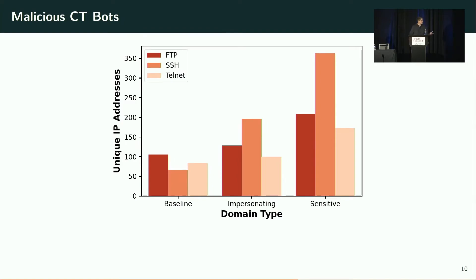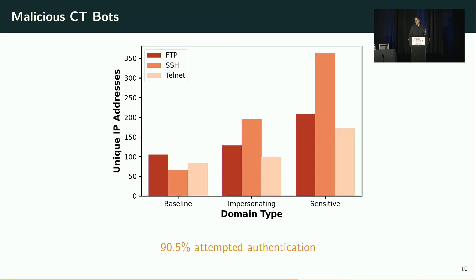We also observed malicious behavior among these bots. Alarmingly, bots targeting sensitive domains exhibited requests to our network honeypots at almost double the rate compared to the other two groups. Of all three groups, over 90% attempted authentication with these honeypots — these weren't just TCP connection attempts to check if a port was open; the bots actually went ahead and tried to authenticate with the honeypot.